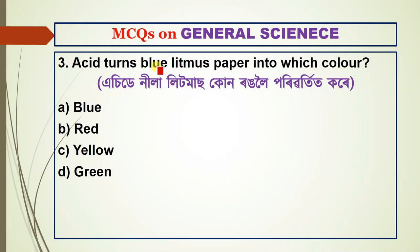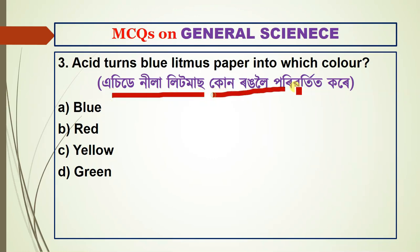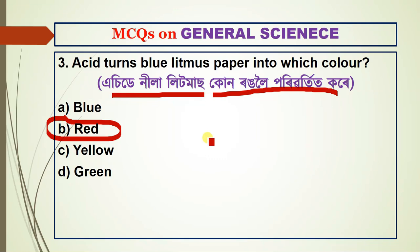Question number three: litmus paper — which color does it turn? It turns blue litmus paper into which color? The answer is: it turns into red color.